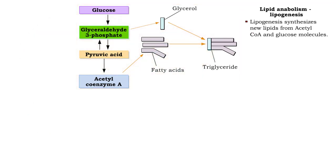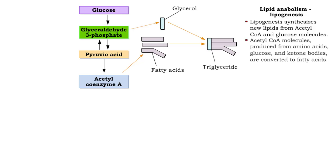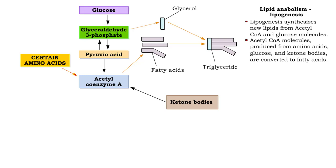New lipids, or triglycerides, are synthesized from acetyl coenzyme A and glucose molecules. Acetyl coenzyme A molecules are produced from amino acids, glucose, and ketone bodies. These molecules are then converted to fatty acids.